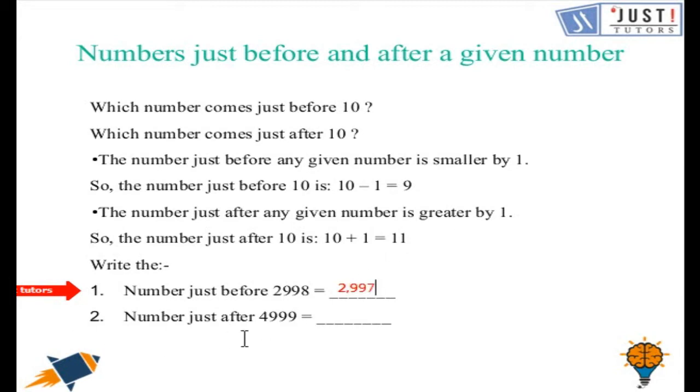Similarly, we have to find number just after 4999. If you think clearly, the number just after 4999, we have to add 1. So that gives you 5000.